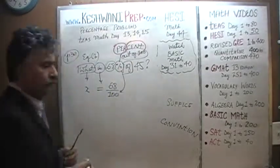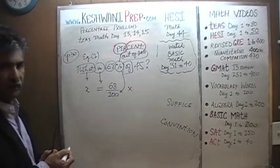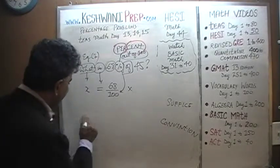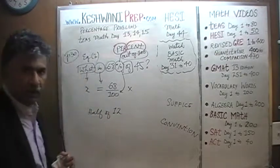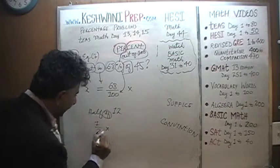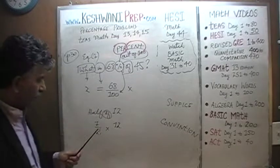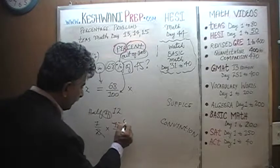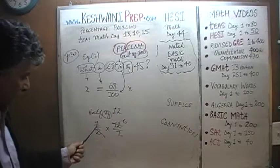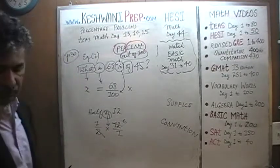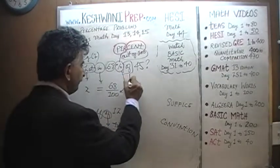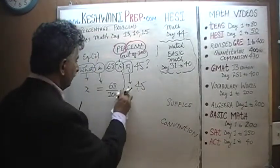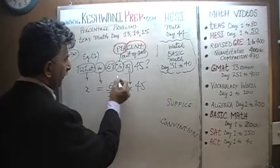What does 'of' mean? 'Of' means multiply — 'of' means times. For example, if someone asks you what is half of 12, you express it as 1/2 times 12/1. Divide top and bottom by 2, 2 goes away and 12 becomes 6 — half of 12 is 6. That's what's going on: 'of' means multiply. So we have: X equals 68 over 100 times 45. That's your equation. Don't confuse my X with my multiplication sign — X is the unknown.